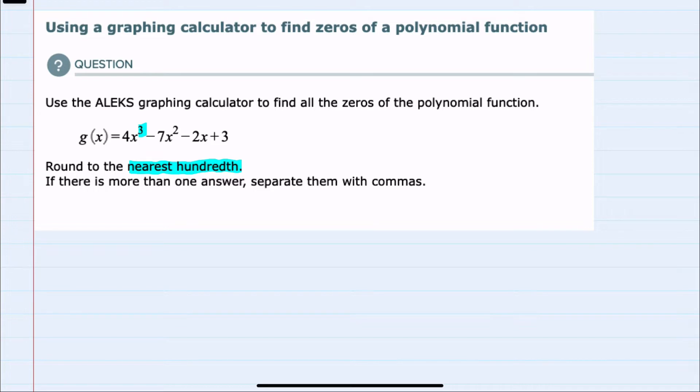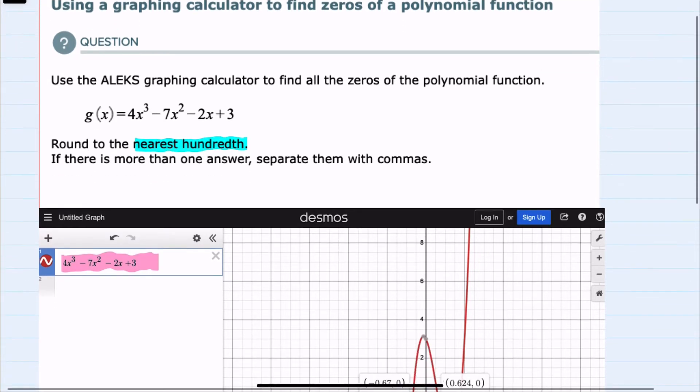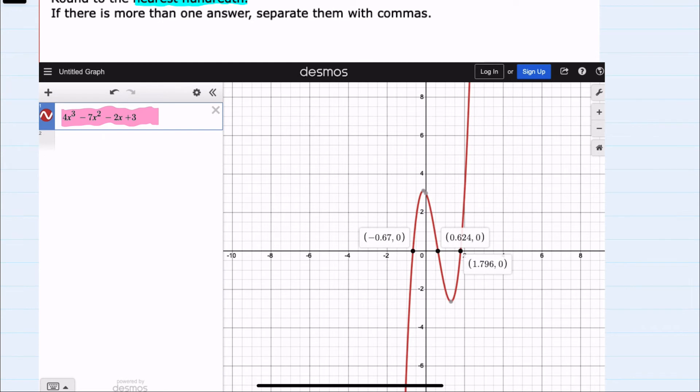Instead of using the ALEKS graphing calculator, I plug this function into Desmos and I can see that there are, for this example, three zeros. The first occurs at negative 0.67.